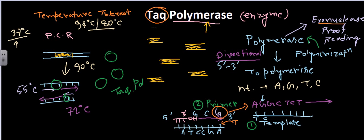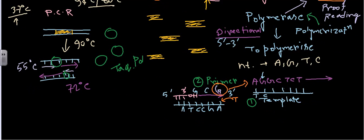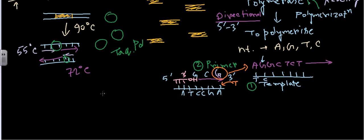Another feature of Taq polymerase is that it is an 80 to 90 kilodalton molecular weight protein. It is termed Taq polymerase because it is isolated from a bacteria called Thermus aquaticus.